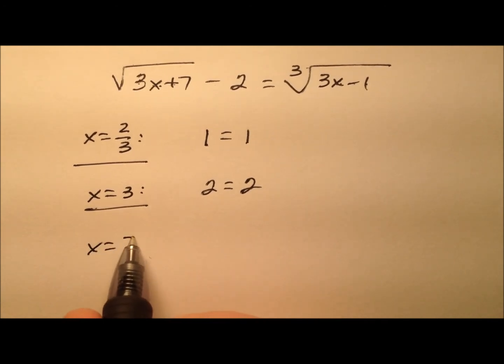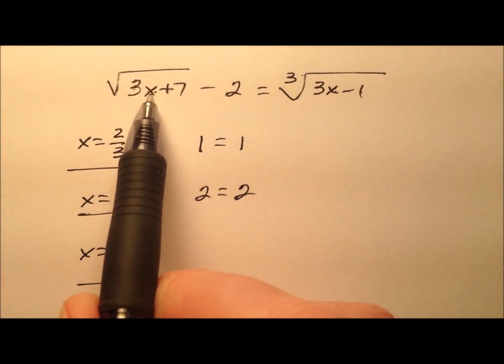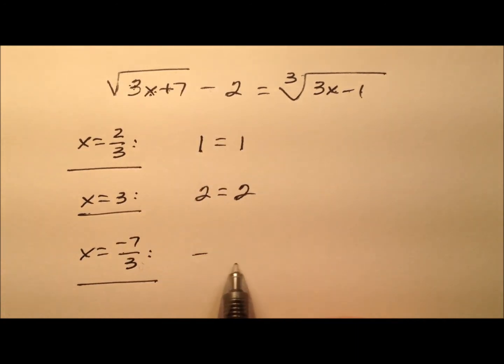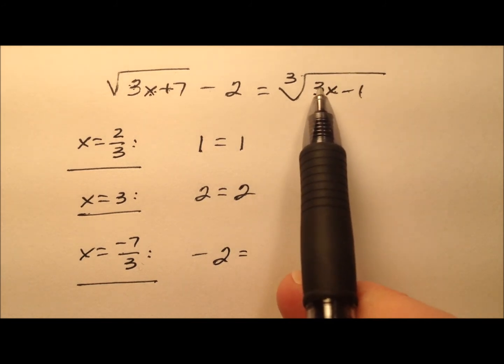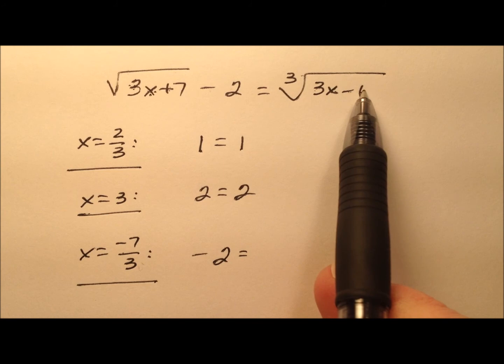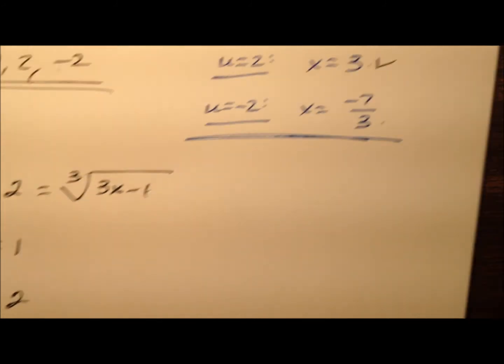So finally, let's try this negative 7 thirds value for x. So 3 times negative 7 thirds is negative 7 plus 7 is 0. Square root is 0. So then we just have negative 2 over there on that left side. And on the right, 3 times negative 7 thirds, still negative 7. Minus 1 is negative 8. Cube root is negative 2. Hey, all three of these values work.